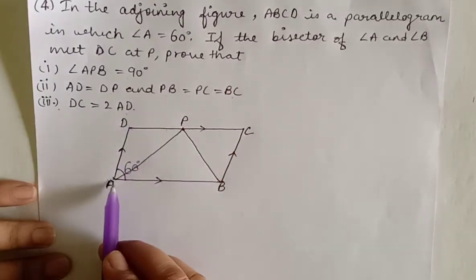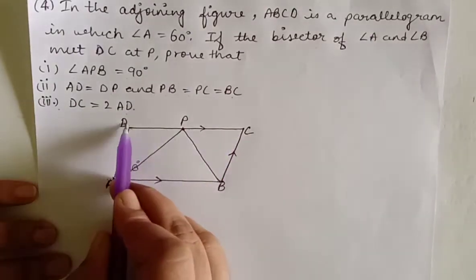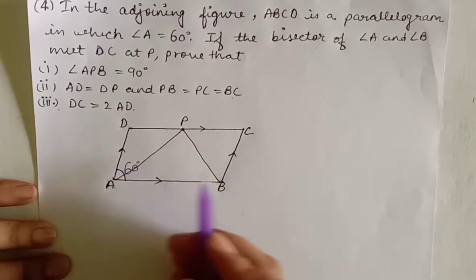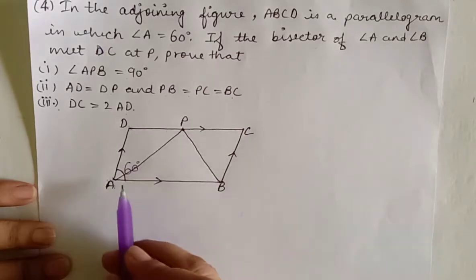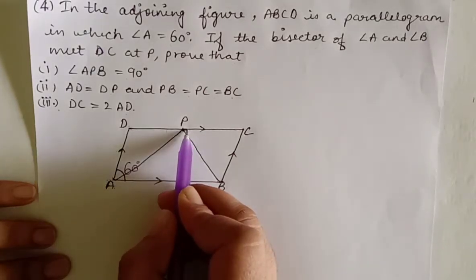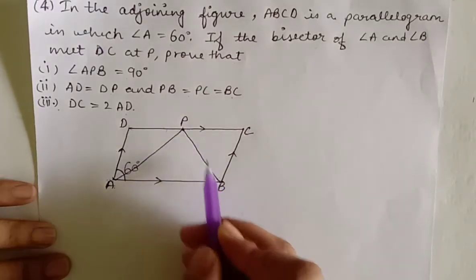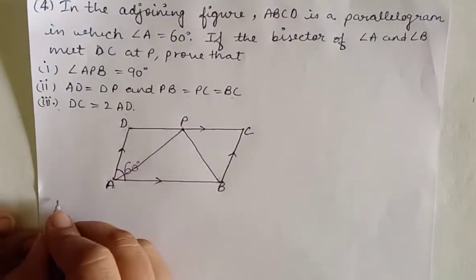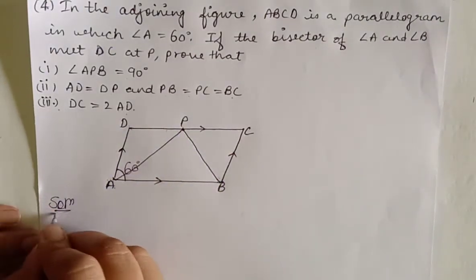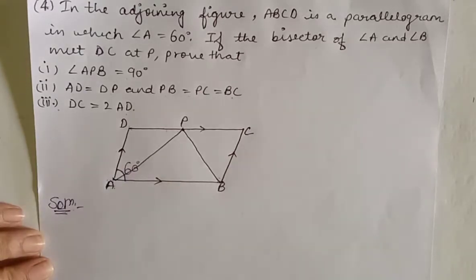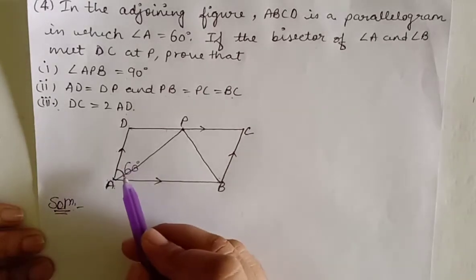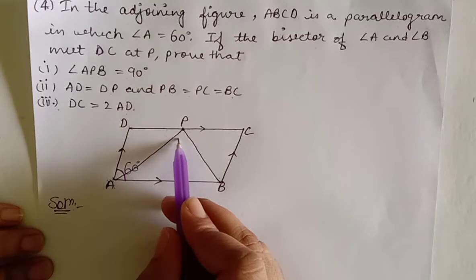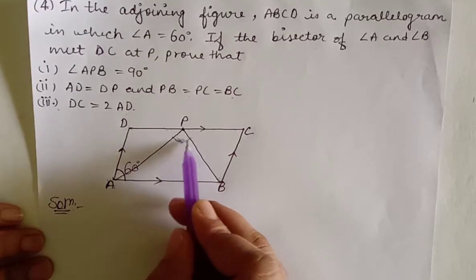This is the figure ABCD — a parallelogram. Angle A is given as 60 degrees, AP is the bisector of angle A, and BP is the bisector of angle B. Let us start to prove it. First, concentrate on what you have to prove: angle APB is equal to 90 degrees. This angle will be 90 degrees — you have to prove that.